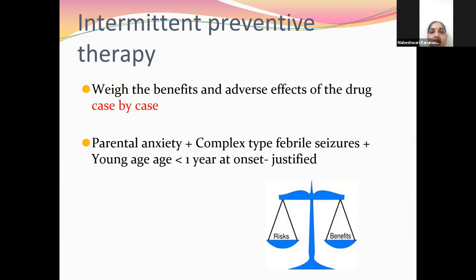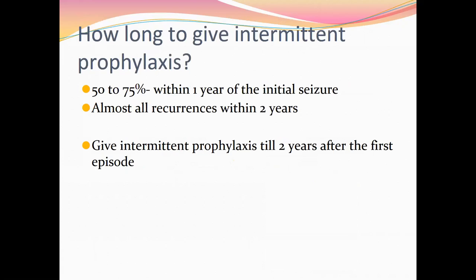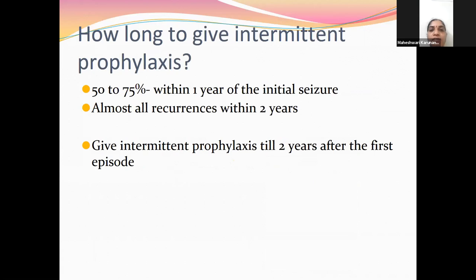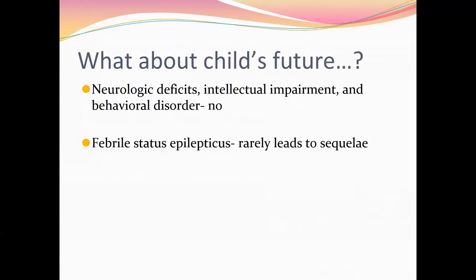When considering prophylaxis, side effects as well as benefits must be taken into account. Complex febrile seizures and younger age of the child are definite indications because recurrence is anticipated and parental anxiety is high. Risk has to be weighed against benefits. Around 50 to 75% of children have recurrences within one year of initial seizures, and recurrences occur within two years. Therefore, it is better to give intermittent prophylaxis for two years after the first episode.